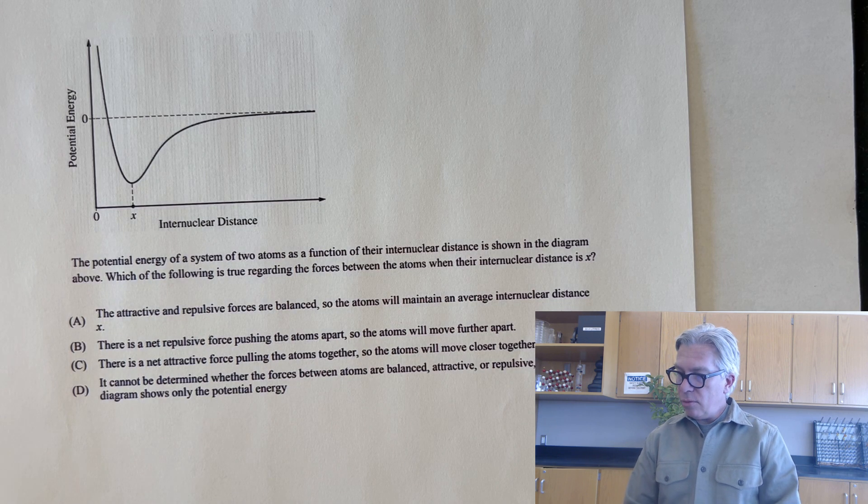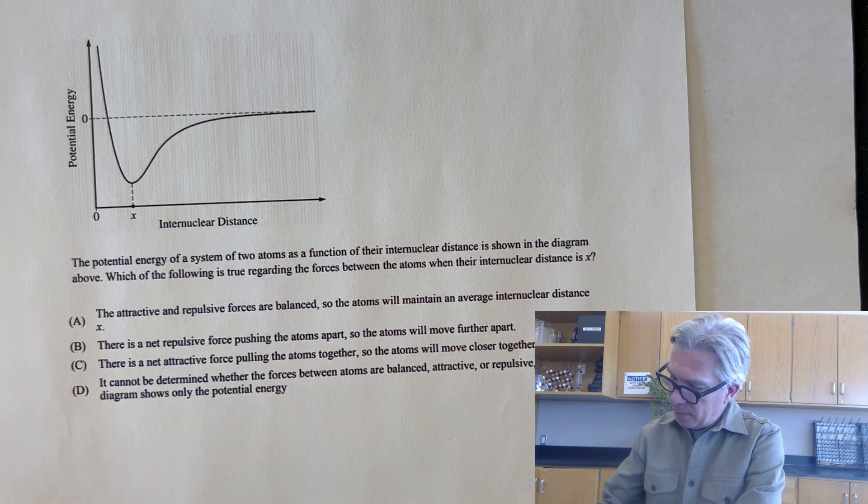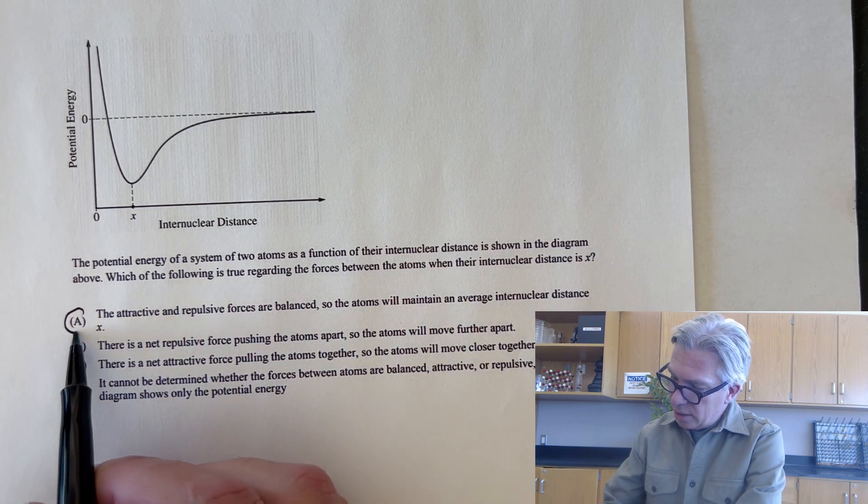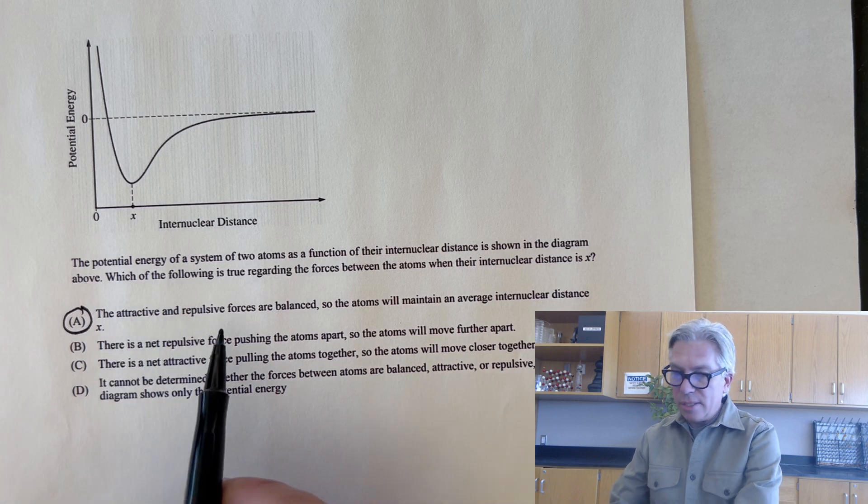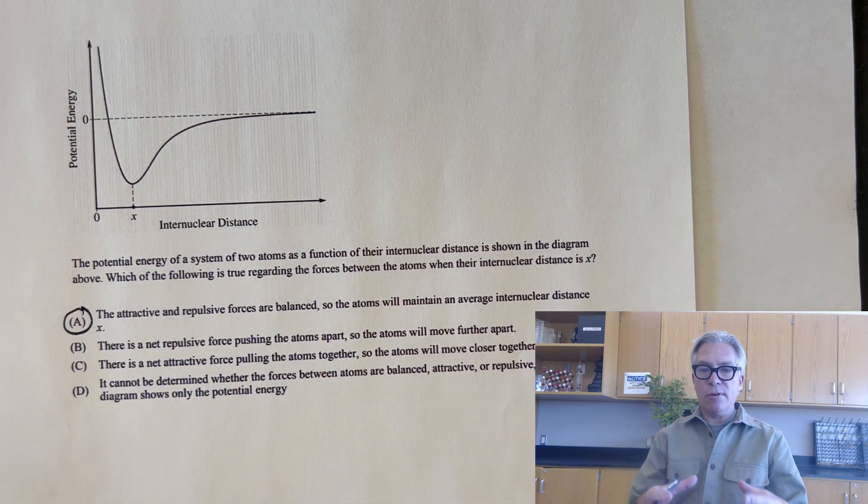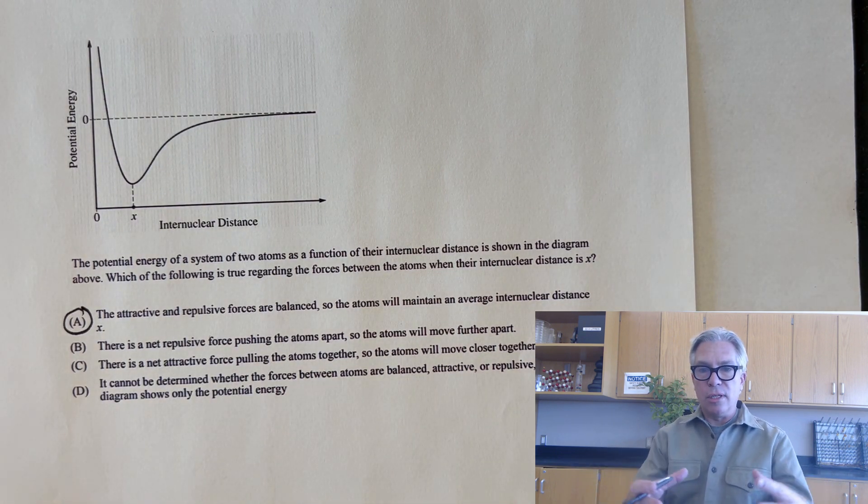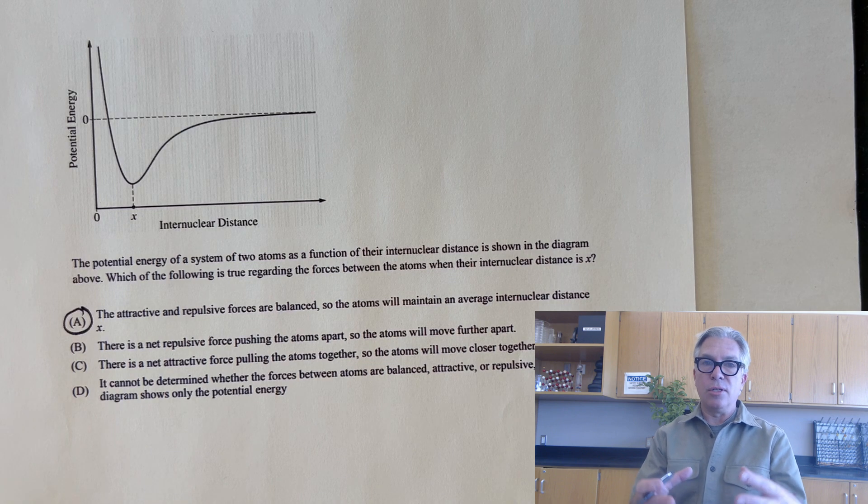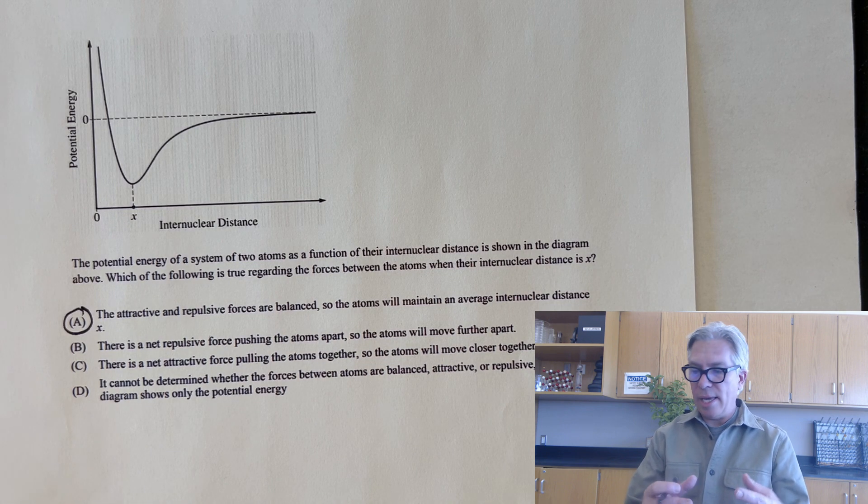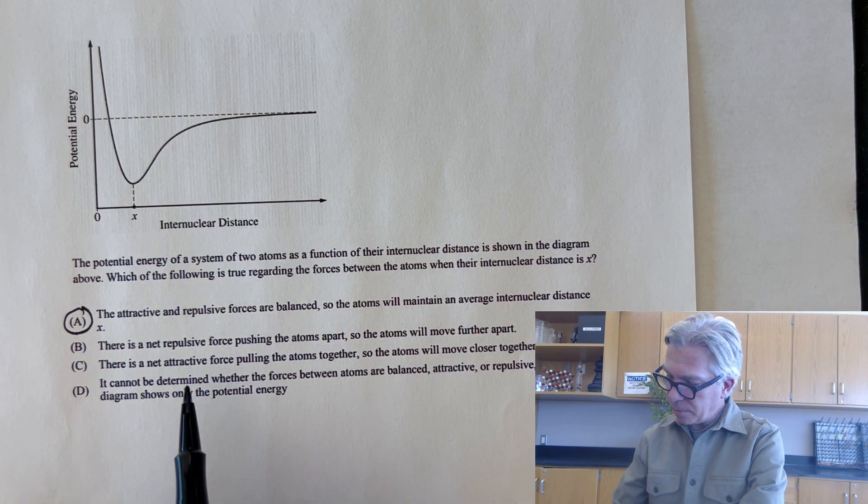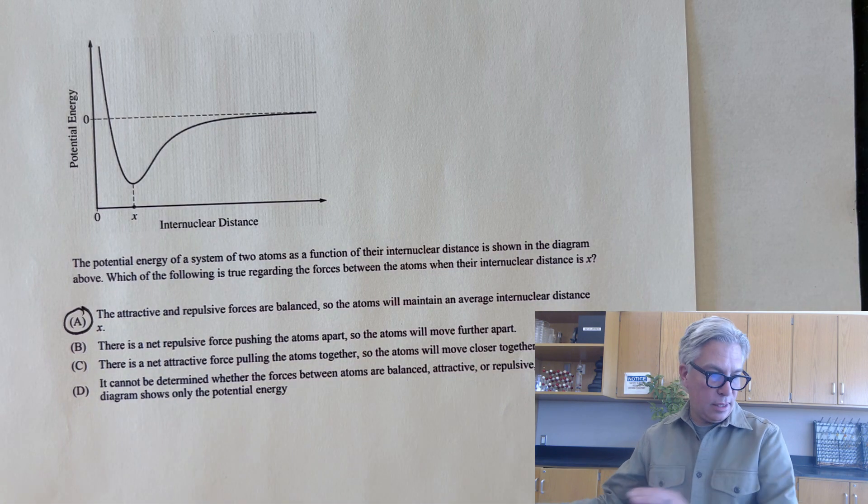And if you chose A as your answer, then congratulations. The attractive and repulsive forces are balanced at that moment. When they form that chemical bond, the electrons are attracting the nuclei, but the nuclei are repelling each other, but they're balanced and they'll hang out generally in that area. So good job on that.